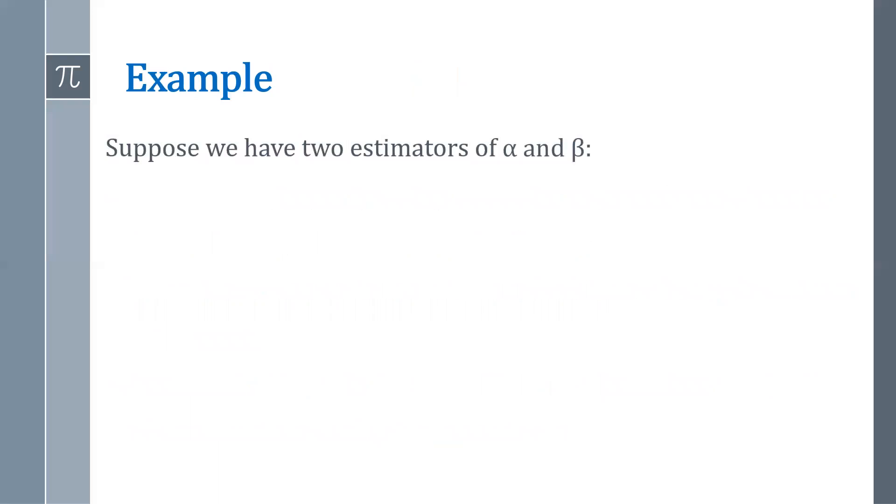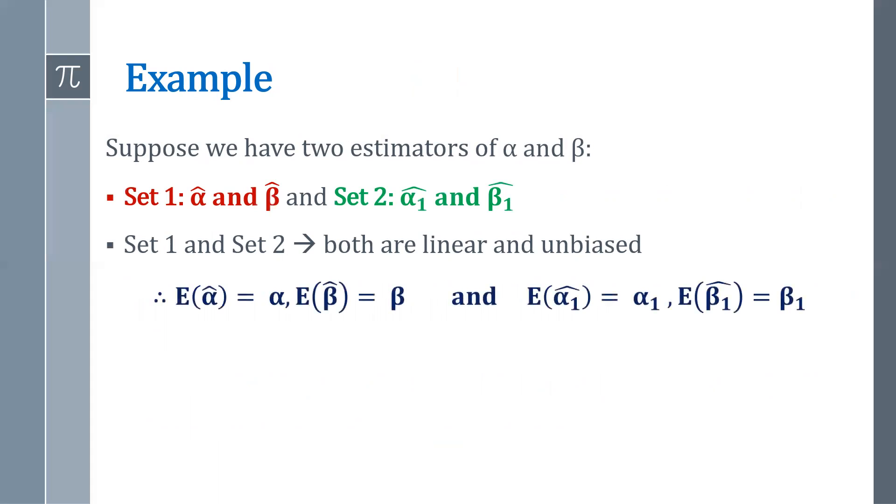See this example. Suppose we have two estimators of alpha and beta. One is alpha hat and beta hat, and second is alpha one hat and beta one hat. Both sets are linear and unbiased. So we can say that expected value of alpha hat is equal to alpha, expected value of beta hat is equal to beta, expected value of alpha one hat is equal to alpha one, and expected value of beta one hat is equal to beta one.